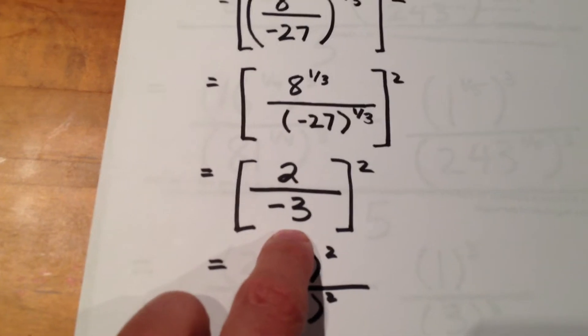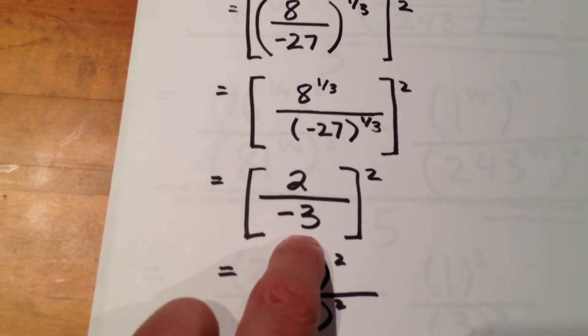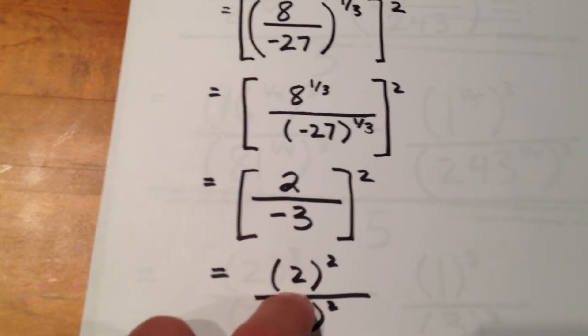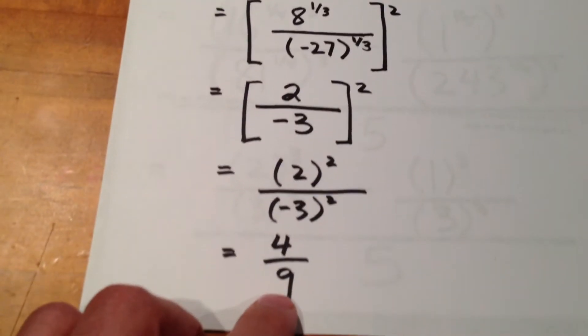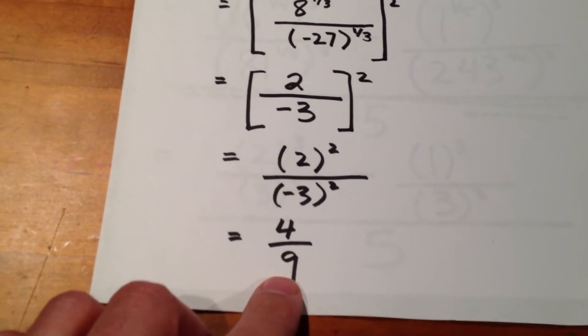So, 2 over negative 3 quantity squared is going to be 2 squared over negative 3 as a quantity squared. 2 times 2 is 4, negative 3 times negative 3 is 9.